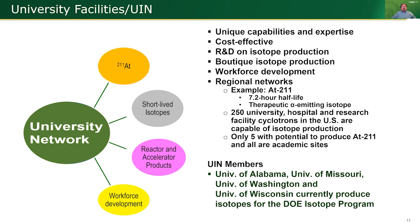The University Isotope Network was largely born out of the idea that certain isotopes might have a short half-life or be needed in smaller batches — these 'boutique isotopes' — which would be better facilitated through universities than through scheduling batches at a national laboratory, which would increase cost, or where national laboratories might not have the correct beam to produce them. Specifically, astatine-211 was the first isotope we started with the University Isotope Network. Those members are listed on the screen.